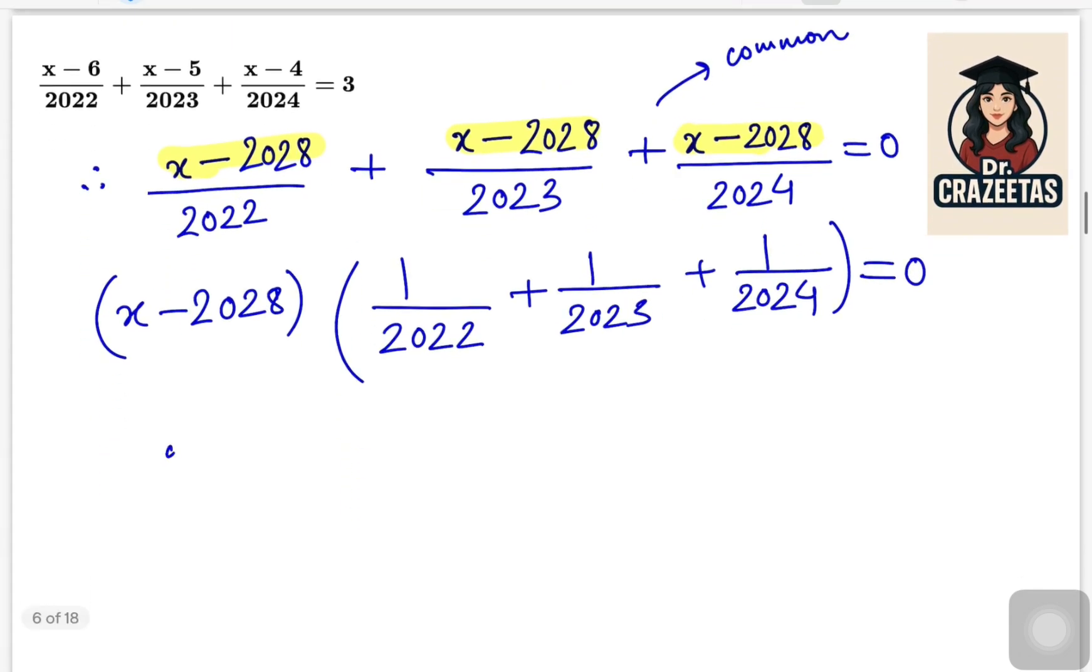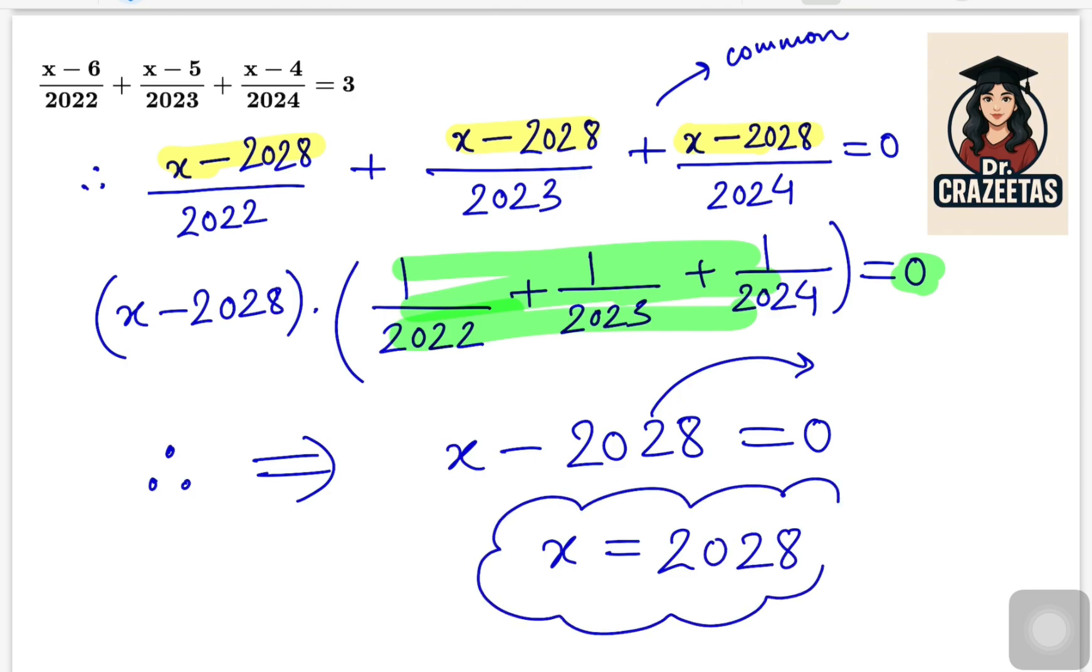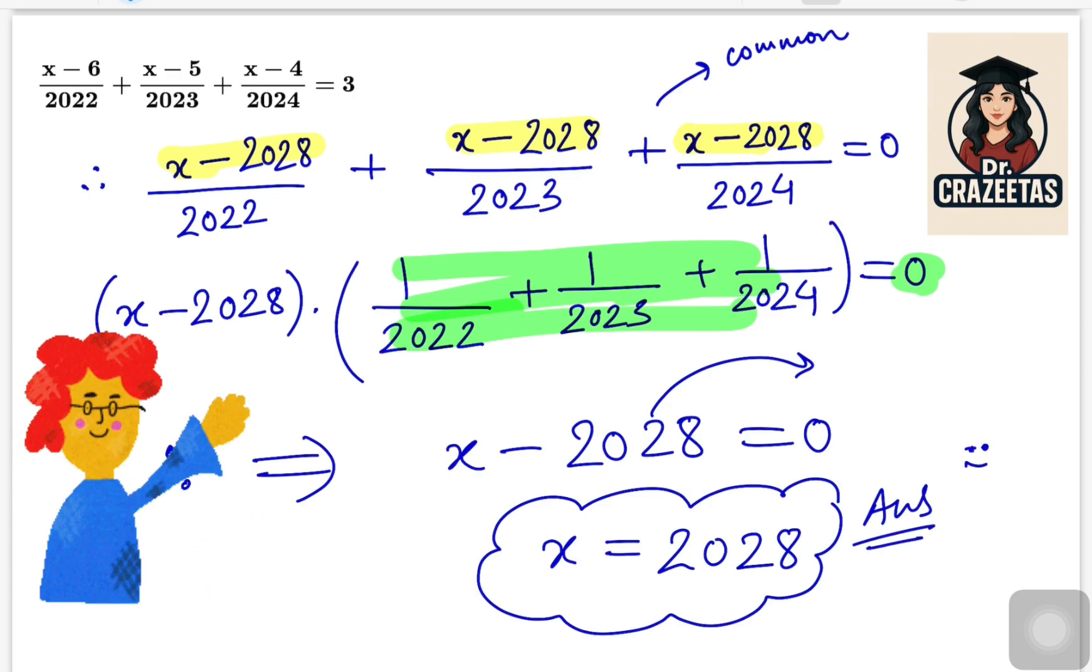Two bracket multiplication equals to 0, so we can equate both of them equals to 0. But the second bracket is all numbers, there is no x, so we are just taking the first bracket: x minus 2028 equals to 0. When we shift negative to other side it will become positive. So this is the answer: x equals 2028. Please post the verification step in the comments. See ya.